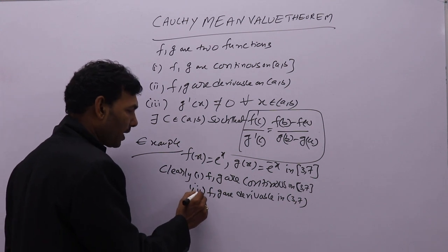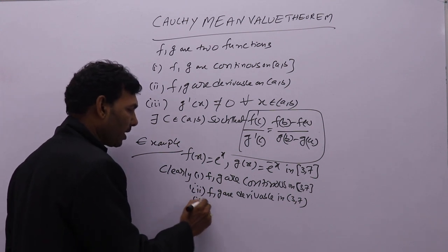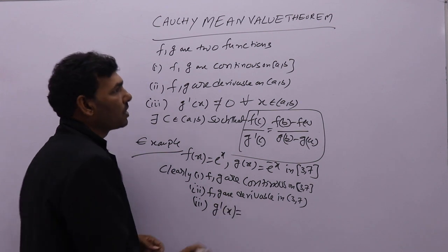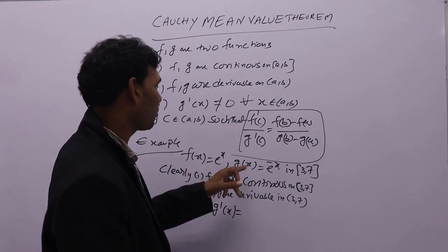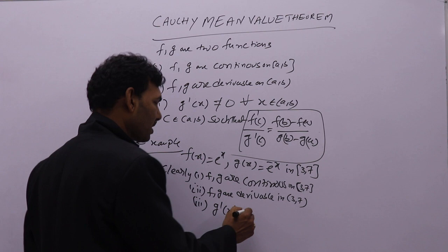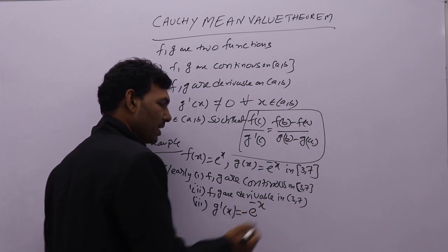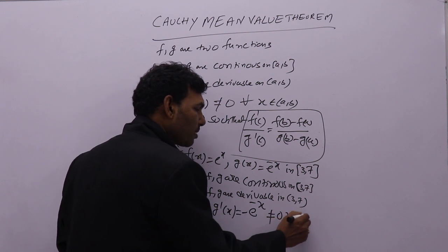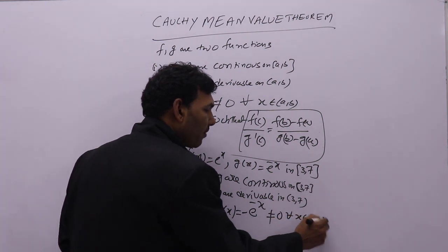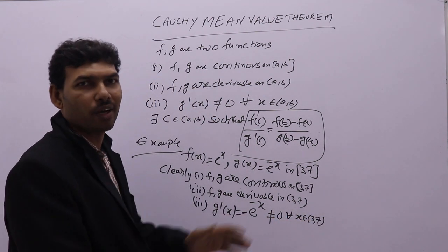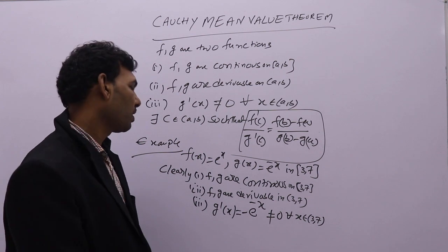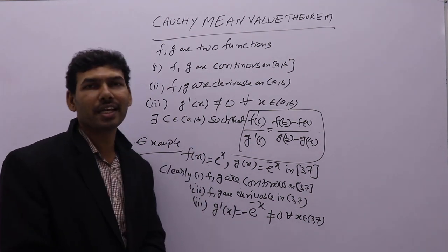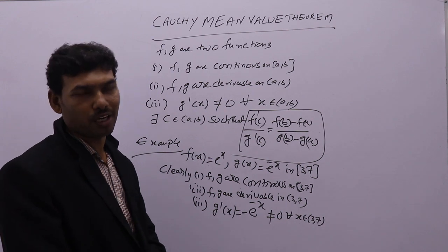Third condition: g dash of x equals the derivative of e power minus x, which is minus e power minus x. This will not be equal to 0 for all x belonging to open interval (3, 7). Therefore, f and g satisfy all three conditions of Cauchy mean value theorem.